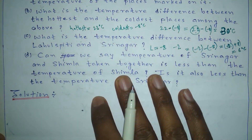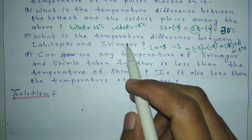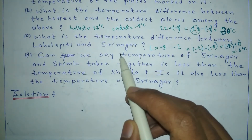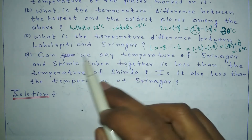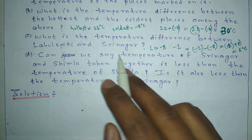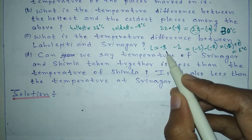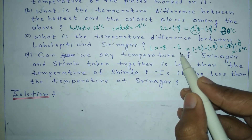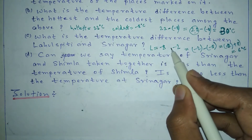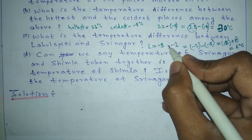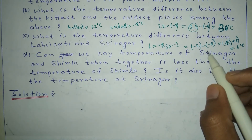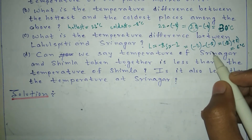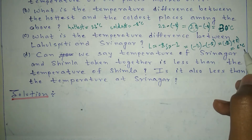In question C, we find the temperature difference between Lahul Spiti and Srinagar. Lahul Spiti is minus 8 and Srinagar is minus 2. When we subtract: minus 2 minus (minus 8) gives us 6 degrees Celsius, so the temperature difference between them is 6 degrees Celsius.